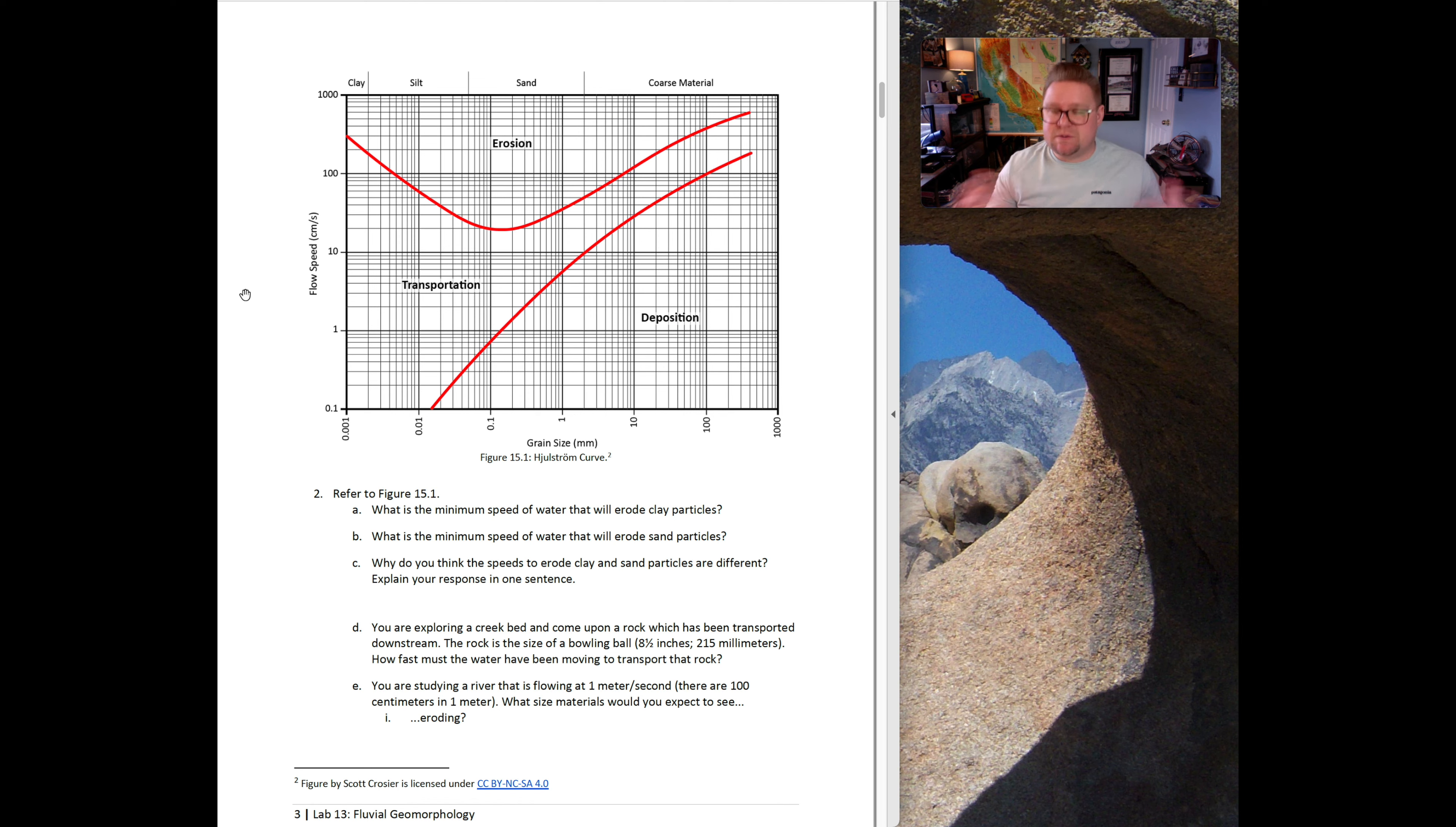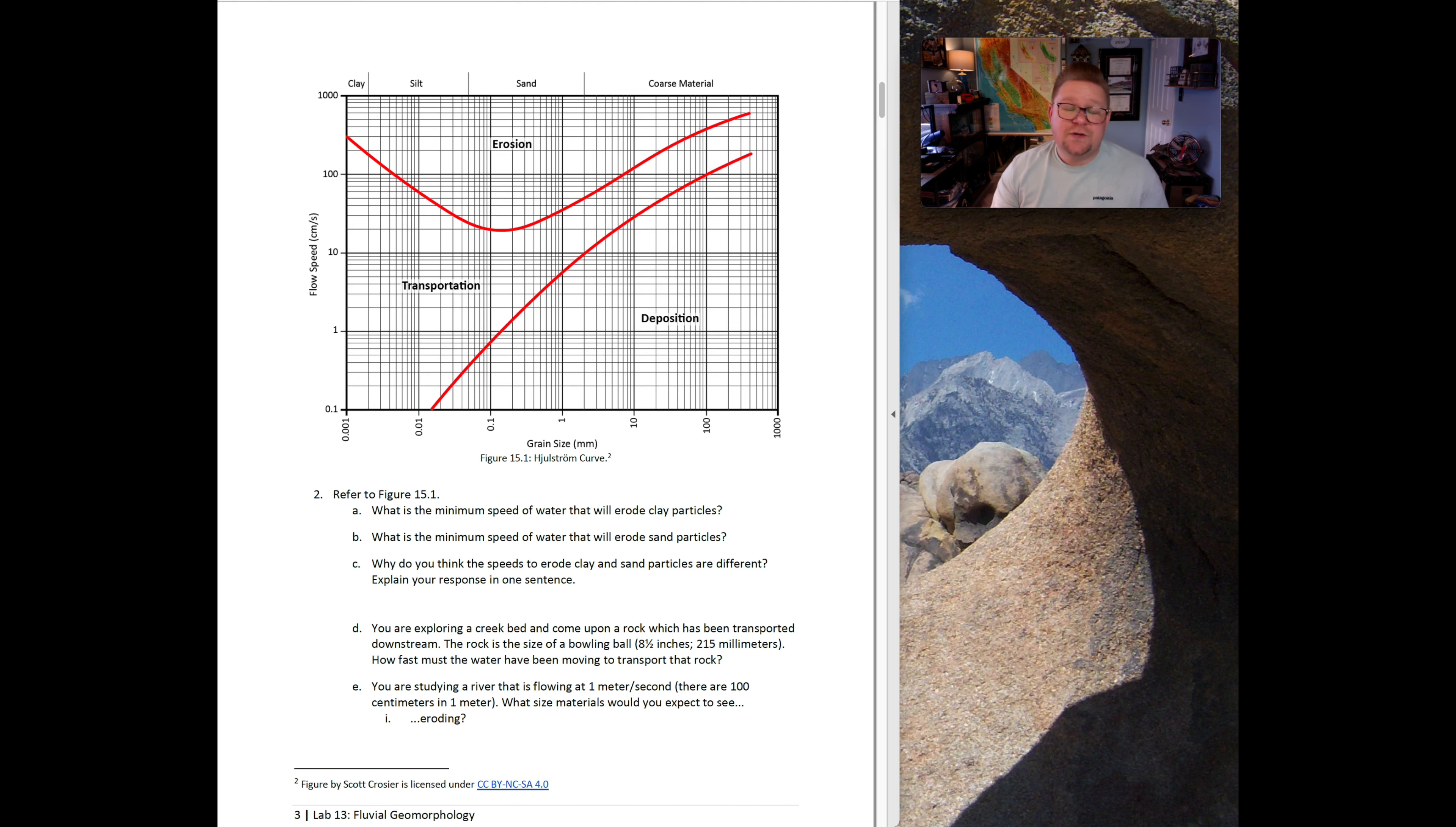What we're able to identify is looking at the particular flow speed or velocity of a river broken up into cubic centimeters per second. Maybe it's 10 cubic centimeters per second, it would be along that line there. Depending on that velocity, we can then look at a particular grain size to see would it and could it move, and if so, what would it be doing. If it was at 10 cubic centimeters per second and the grain size was one millimeter, that material would be transported. If it was a little bit larger, maybe 10 millimeters in grain size, that would be material that would be deposited at that flow.